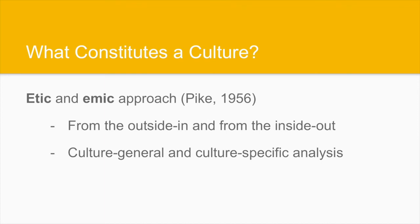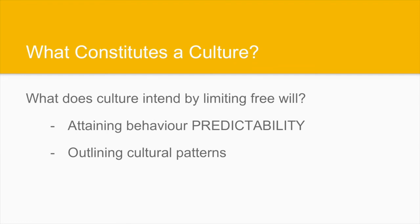Another contribution from the field of anthropology is Pike's 1956 distinction between the etic and the emic approaches. From the outside in implies that we are observers of culture in general and criticize what we find alienating. From the inside out refers to us as members of that particular culture interpreting meaning that could not be understood from the outside — a culture-general and culture-specific analysis that facilitates examination of cultural building blocks. A legitimate question is: what does culture as a system intend by limiting its members' free will? The most immediate answer is to achieve predictability of behavior, as everyone is a member of that culture and accepts its rules.